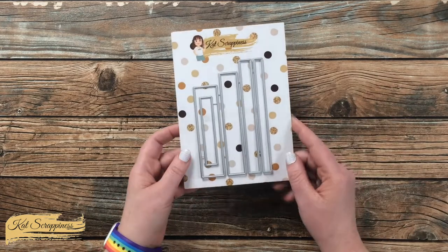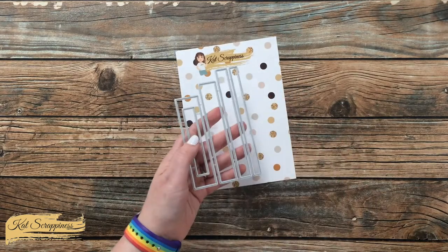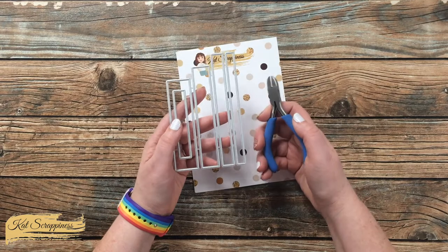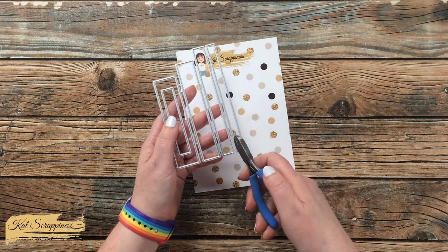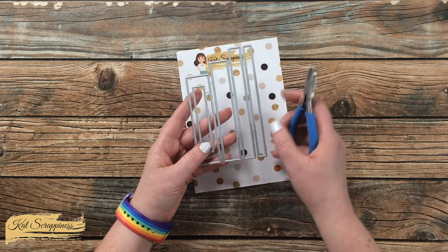When you get your dies, they will come with little metal pieces holding them together, but you can just bring in your wire cutters and snip these apart. Now I like to do it over a trash can, so I'm going to go do that and be right back.